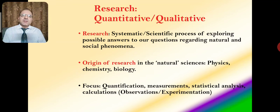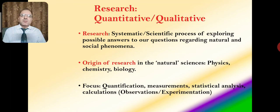The origin of research has basically come from the field of natural sciences including physics, chemistry, biology, and other such branches. The focus of such research was on the quantification of phenomena, the measurement of phenomena, and statistical analysis including calculations. The tools of data collection in this way included observations and experimentations.